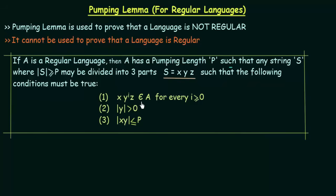The conditions are: first, XY^i Z belongs to A for every i greater than or equal to zero — meaning the string S divided into X, Y, Z, keeping X and Z as they are, if you increase the middle part Y any number of times, the resulting string must also belong to A. Second, the length of Y must be greater than zero. Third, the length of XY together must be less than or equal to P, the pumping length.